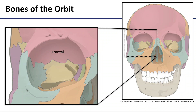The superior wall, or the roof, is formed by the frontal bone. Posteriorly, contributing a little bit to the floor and the superior portion of the back wall, is the sphenoid bone.